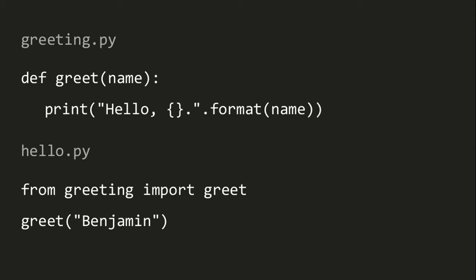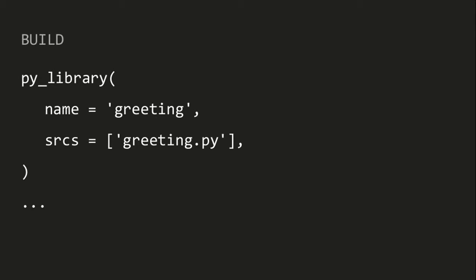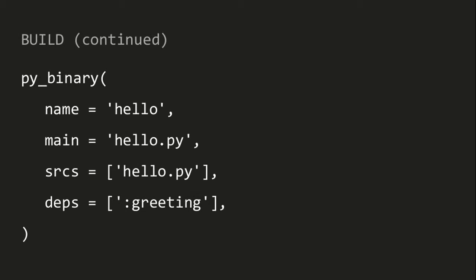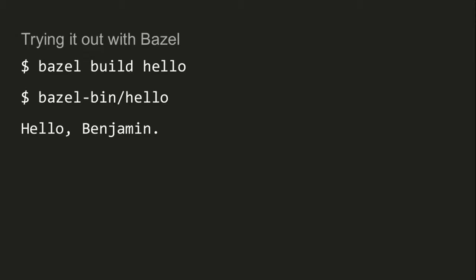How do we express this Python program in Bazel terms? Here's what our build file looks like — you can see it's actually quite analogous to the C++ one. We define a Python library called greeting, which has greeting.py as a source file — no header files to worry about. And then we have a py_binary which has the main function in hello.py, and then the only source file is hello.py — in theory we could have more files in our binary. Again, we declare a dependency on the greeting library with this relative target syntax. We run Bazel build hello, and just like the C++ program, we get an executable in Bazel-bin called hello. If we go ahead and run it, we see that we've managed to build a functioning application.